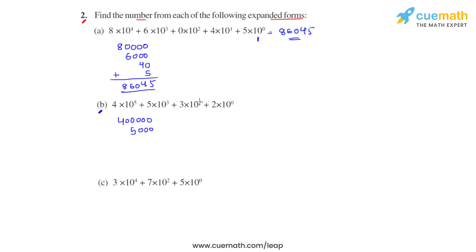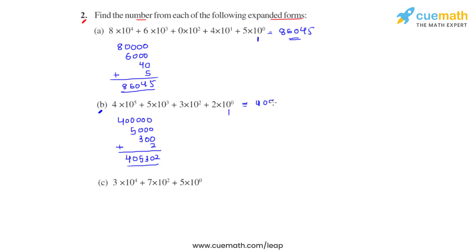Plus 3 times 10 raised to 2, that is 3 followed by 2 zeros. And finally we have 2 times 10 raised to 0 — 10 raised to 0 is 1, so it will be 2 itself. We add up all these numbers and the final answer we get is 405302. So for part b the answer is 405302.